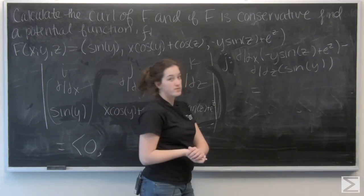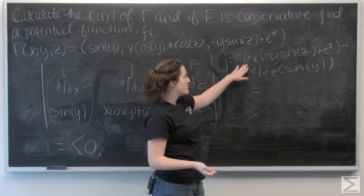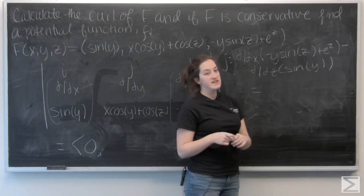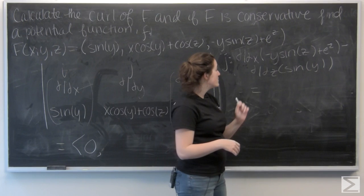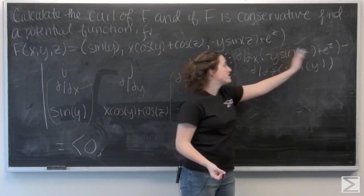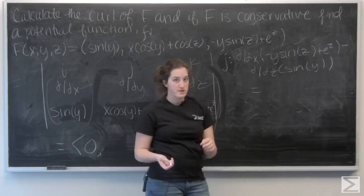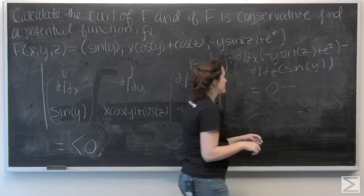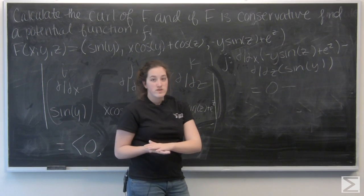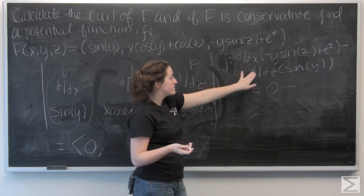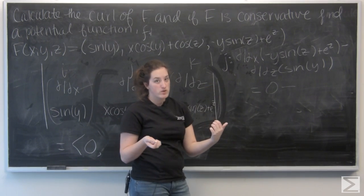So let's go ahead and do the first component. I have the partial derivative with respect to x of negative y sine z plus e to the z. None of these terms are actually a function of x, so this is all being treated like a constant — that's going to be zero. And now the second term: the derivative of sine of y with respect to z. Nothing here is a function of z, so this is just going to be zero, making my whole j component zero.